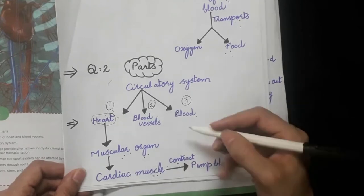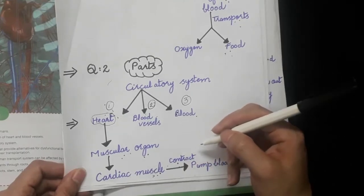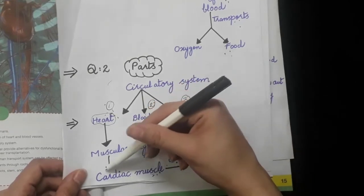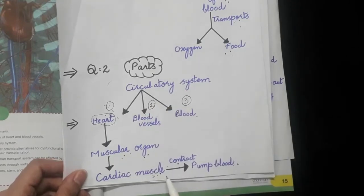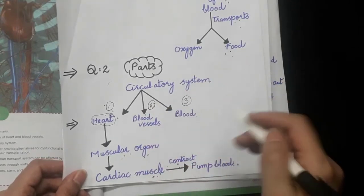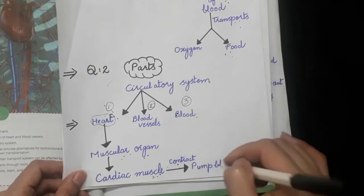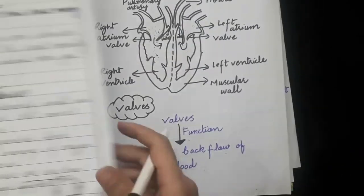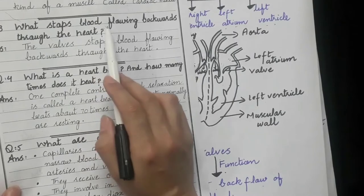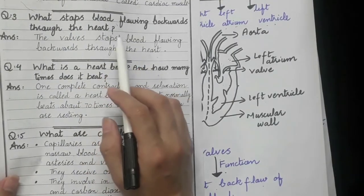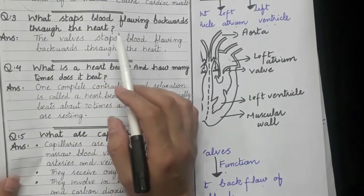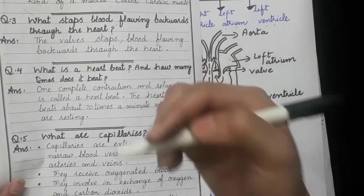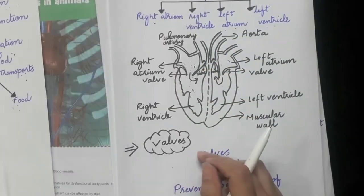The cardiac muscles contract and in this way the heart helps to pump blood around our body. The heart is a special kind of organ that prevents blood from backflowing. The next question is: what stops blood from flowing backwards through the heart? The heart prevents blood from backflowing.